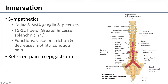The duodenum, as part of the gut tube, is innervated by the enteric nervous system, which is comprised of the myenteric and submucosal plexuses, which are part of and controlled by the autonomic nervous system.